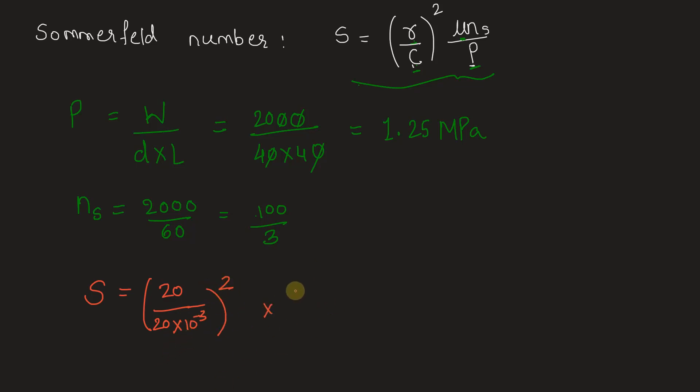3 times 10 to the power minus 8, times speed 100 by 3, times 100, divided by 3 times unit bearing pressure 1.25. This whole term is being calculated in the calculator.